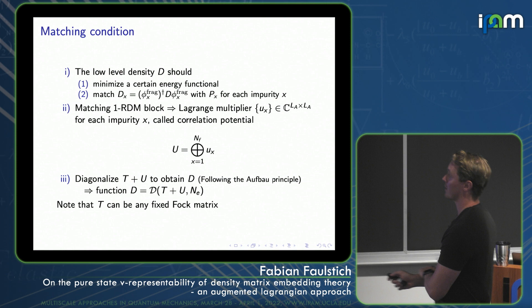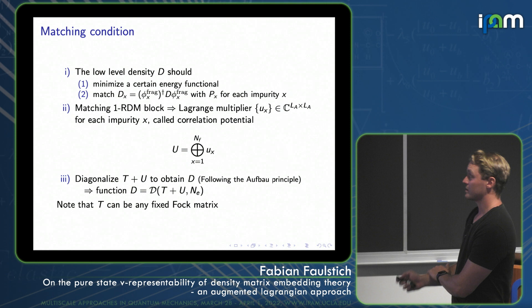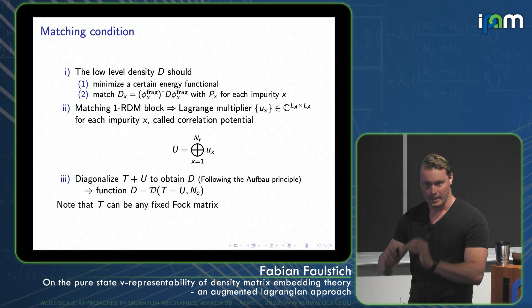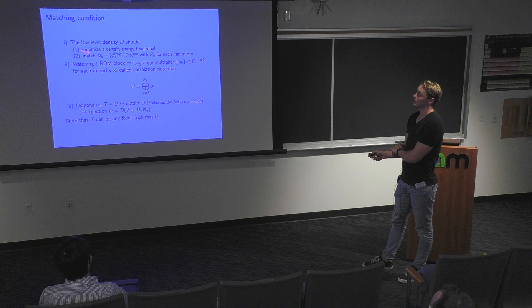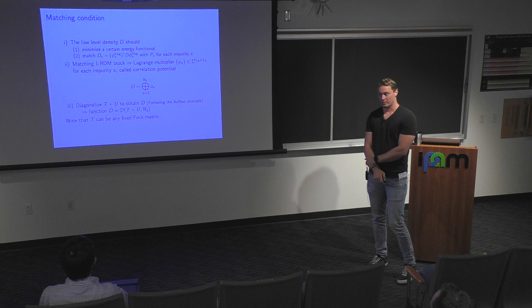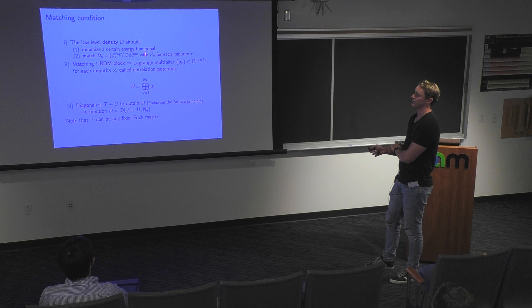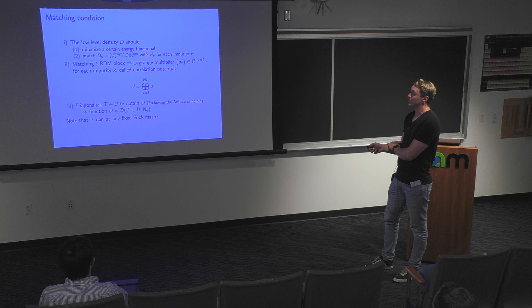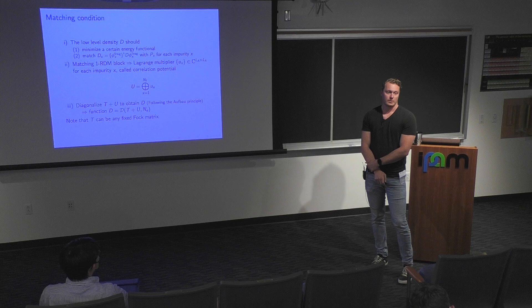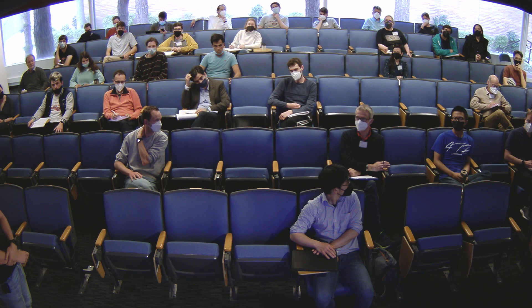I want to pick up from Lin's talk. Lin also talked about the matching condition. What is it that we want from our low-level density? From this object, we want that it minimizes a certain energy functional — this can be picked at your own favorite. And we want that it matches the high-level density matrix blocks. The high-level density matrix blocks throughout this talk are called P_x, and d_x corresponds to the respective block in the low-level density matrix.